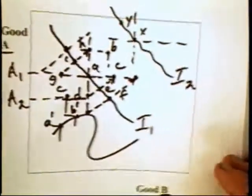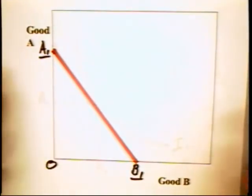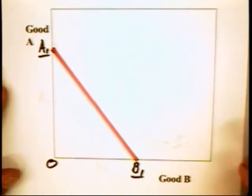We can also investigate how indifference curves look by first introducing a budget constraint. Here we have a very simple world of two goods, A and B.